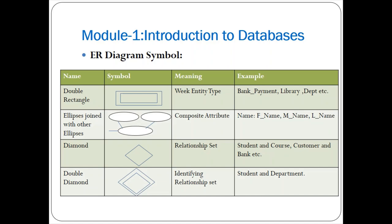The diamond symbol is used for the relationship between two or more entities. For example, if student and course are both strong entities, a diamond symbol is used to represent the relationship between them. The double diamond symbol is used for identifying the relationship between a strong entity and a weak entity — for example, student (strong) and department (weak).